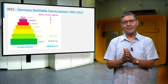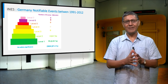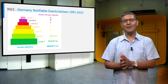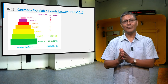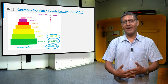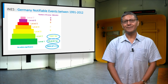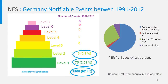This slide shows the evaluation of all events which happened in Germany over a period of 20 years. You can see that almost all events had no safety significance. In addition, for the year 1991, the majority of events happened during power operation and during revision.